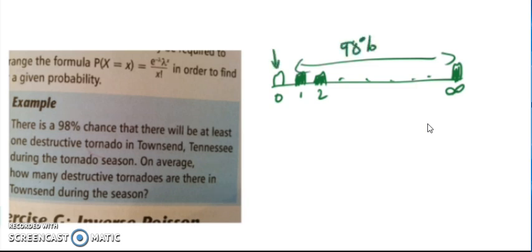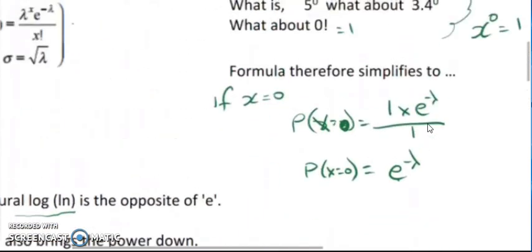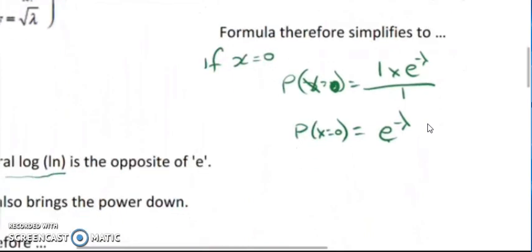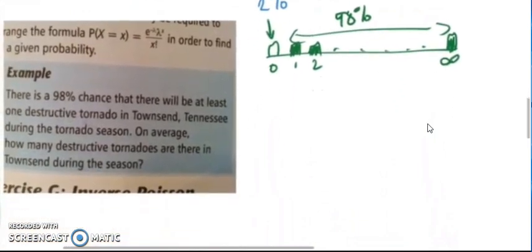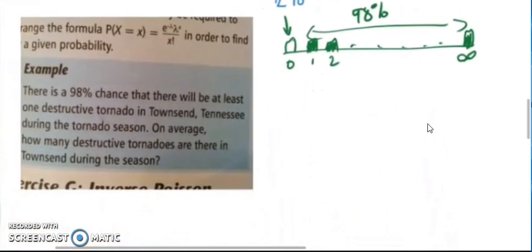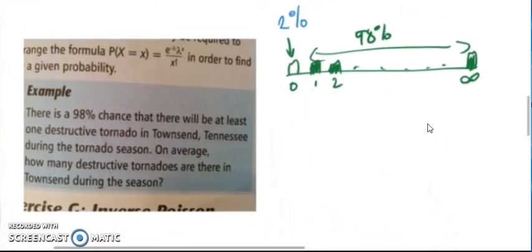Now if we know what the probability of x equaling 0 is, we simplify our formula down to this. So if and only if we know the probability of 0, our formula, our probability, when x equals 0 is e to the negative lambda.